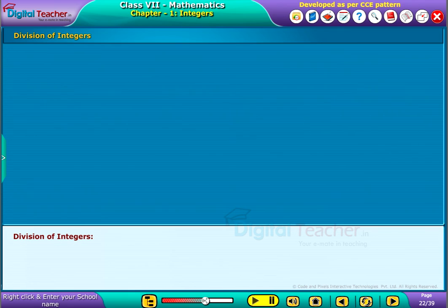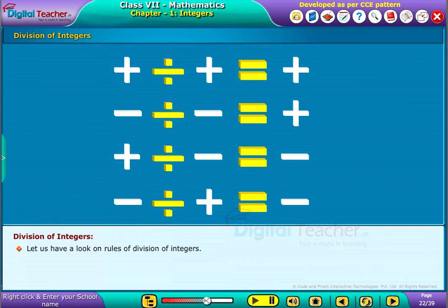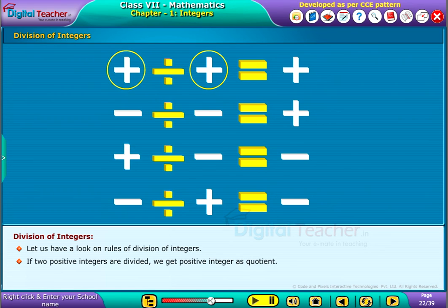Let us have a look at the rules of division of integers. If two positive integers are divided, we get a positive integer as quotient. If two negative integers are divided, we get a positive integer as quotient.